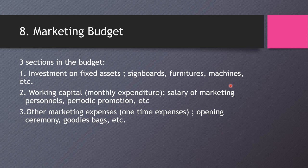Working capital covers the monthly expenditure of the marketing department: salaries of marketing personnel, promotion costs, advertisement payments, flyers, and business cards. Anything you pay monthly for marketing purposes goes into this working capital. Be aware that the operations budget and administrative budget each have the same three sections — fixed assets, working capital, and other expenses — so make sure items are categorized under the correct department.